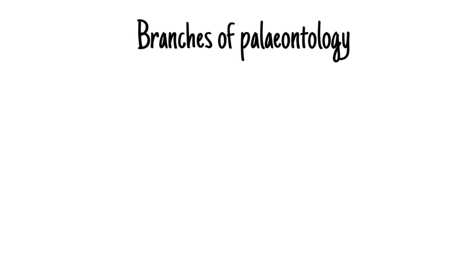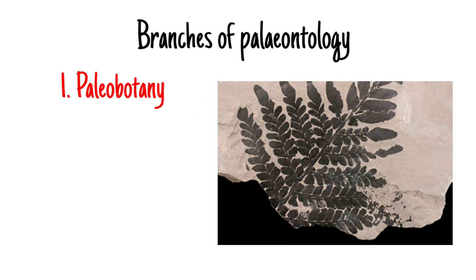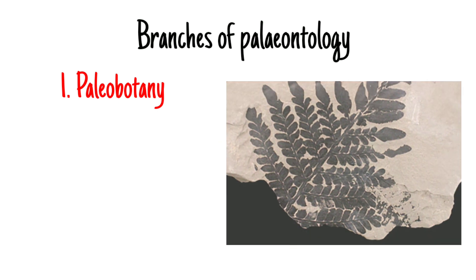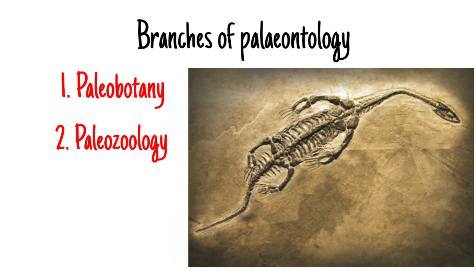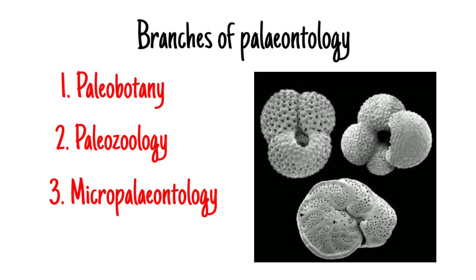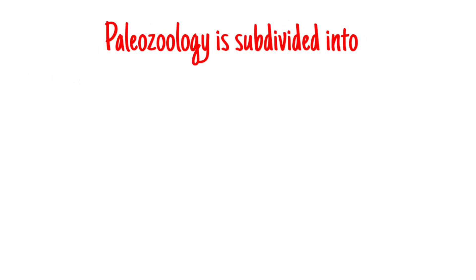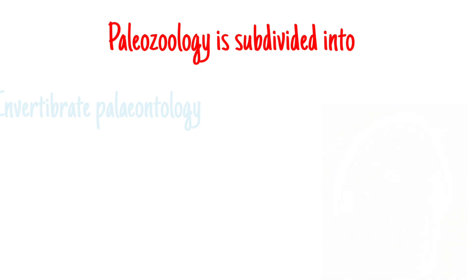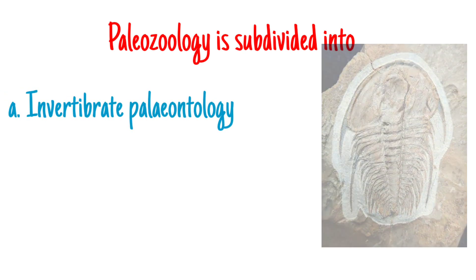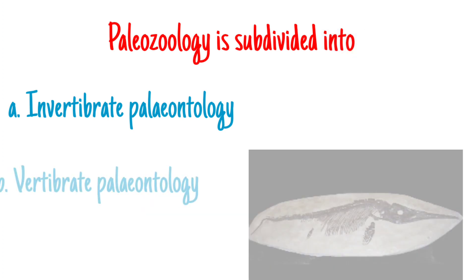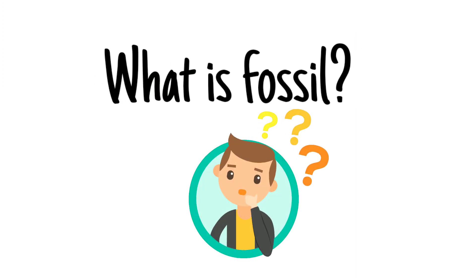Paleontology is subdivided into three branches. The first one is paleobotany, the science of plant fossils. The second one is paleozoology, the science of fossil animals. The third one is micropaleontology, the science of microfossils. Paleozoology is again subdivided into invertebrate paleontology, the study of invertebrate fossils, and vertebrate paleontology, the study of vertebrate fossils.